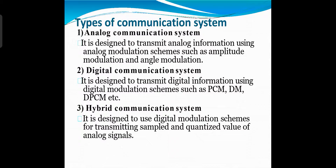Basically there are three types of communication systems: analog communication system, digital communication system, and hybrid communication system. In analog communication, it is designed to transmit analog information using analog modulation schemes such as amplitude modulation and angle modulation. In digital communication, it is designed to transmit digital information using digital modulation techniques such as PCM (pulse code modulation), delta modulation, and DPCM. In hybrid communication, it is designed to use digital modulation techniques for transmitting sampled and quantized values of analog signals.